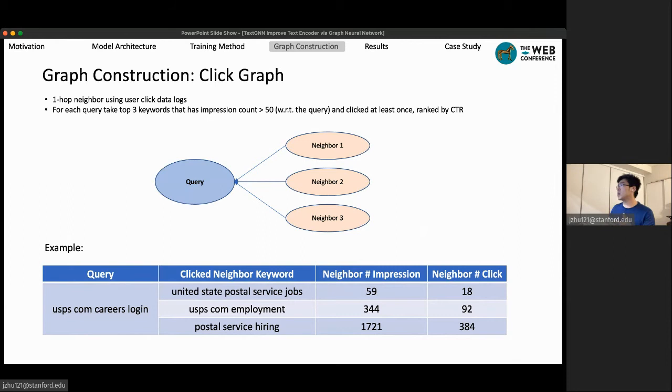For example, I'm showing you an example where we need to find three neighbors for query usps.com careers login. So the top three neighbors in the historical logs are United States postal service jobs, usps.com employment, and postal service hiring.